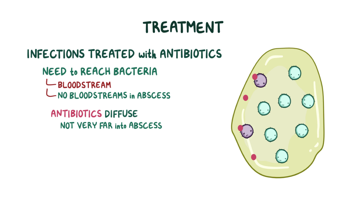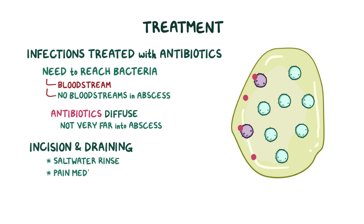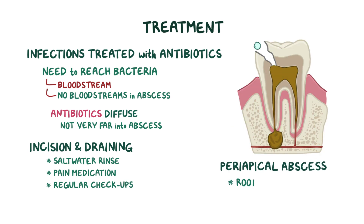You could imagine antibiotics getting to bacteria close to the edges, but not reaching bacteria in the middle. That's why the most important treatment for an abscess is incision and drainage — cutting it open and removing the pus. This is typically followed by frequent saltwater rinses, pain-relieving medications, and regular checkups. For a periapical abscess, a root canal treatment or extraction must be performed to eliminate the infection that can't be reached by incision, drainage, or antibiotics alone. Sometimes antibiotics are used even after drainage to make sure no additional bacteria are lingering.